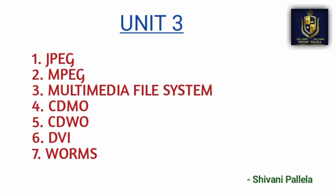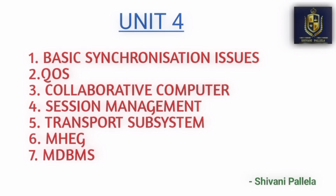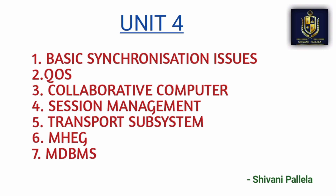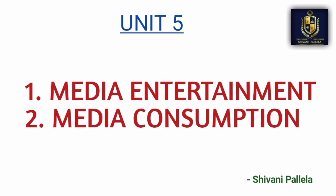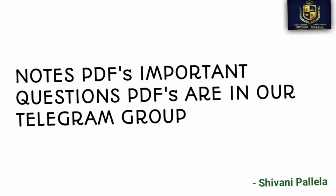For Unit 3 short questions: JPEG, MPEG, and multimedia file systems are already covered in long questions. Important short topics are: what is WORM, DVI, CD-WO, and CD-MO — for CD-MO, write what each letter stands for. For Unit 4, seven short questions are given; MDBMS (Multimedia Database Management System) is important — write out what the abbreviation stands for. For Unit 5, there are only two short questions: media entertainment and media consumption.